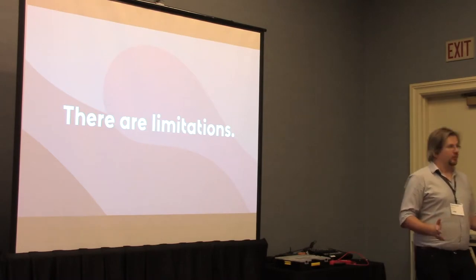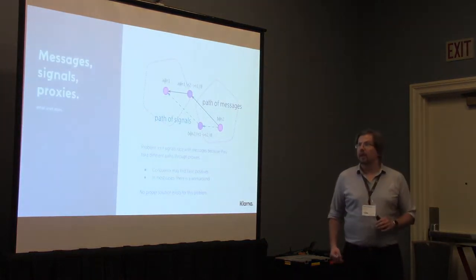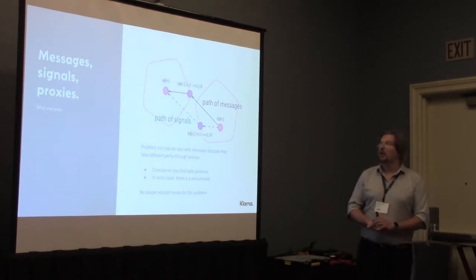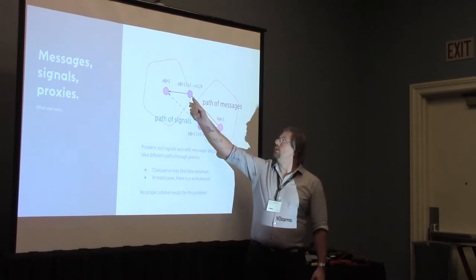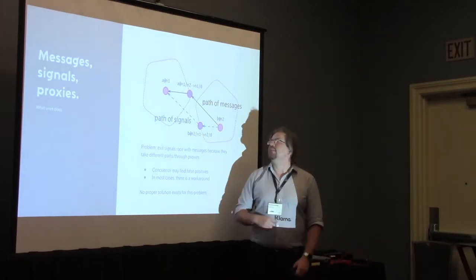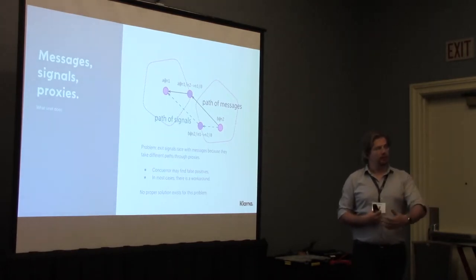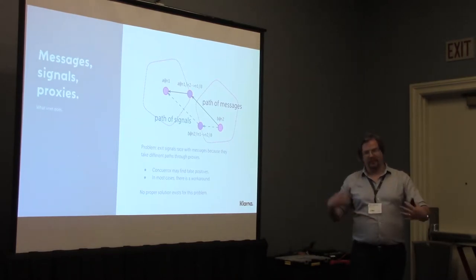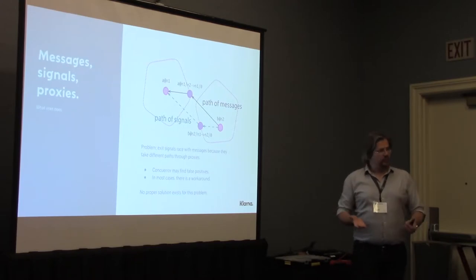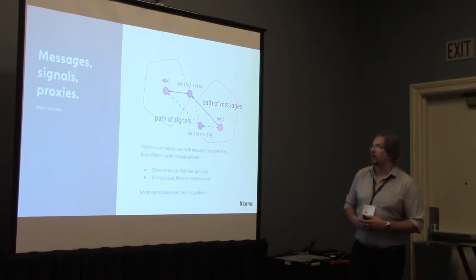Simulators are never emulators. They always have some limit after which they break down and are no longer accurate. VNet is no exception. The biggest limitation is that exit signals are modeled as messages. So if B wants to send a message to A, it goes through A's proxy. But if B exits, the exit signal will kill B's proxy process, and from there it will reach A if A placed the monitor. This means that ConcuerError will have a chance of exploring schedulings that can only happen under VNet, where the DOWN message arrives before the last message from B. If your tests fail under these schedulings, they are only false positives. Luckily, false negatives cannot happen — all schedulings possible on a real distributed Erlang network will be explored by ConcuerError.